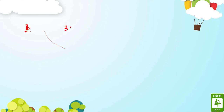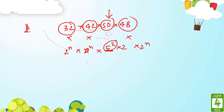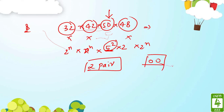Let's try another: 32×42×50×48. This expression has many 2s but few 5s. The only source of 5s is 50 = 5×5×2, giving only two 5s. We have many 2s but only two 5s, so we can make only 2 pairs of (2,5). Therefore, the number of zeros at the end of this expression is only 2.